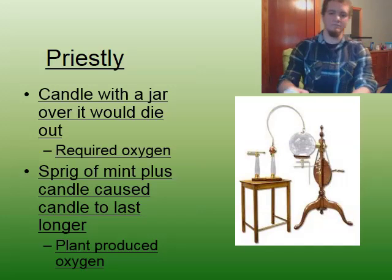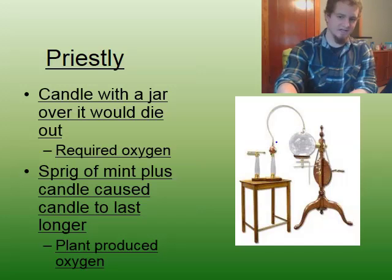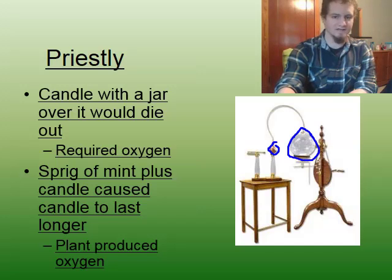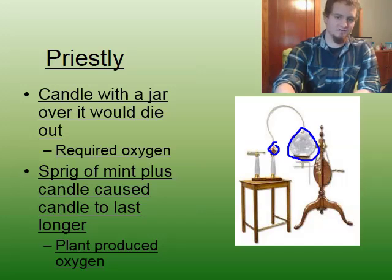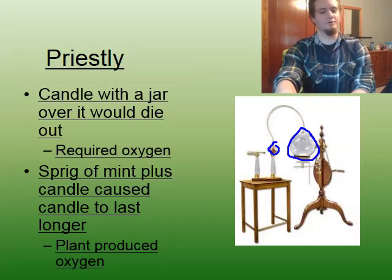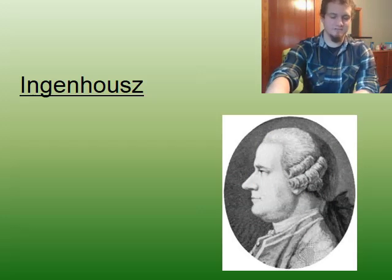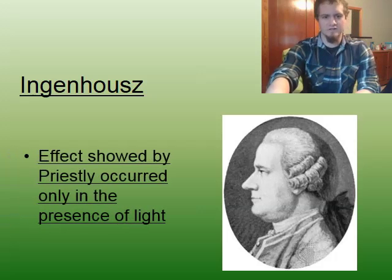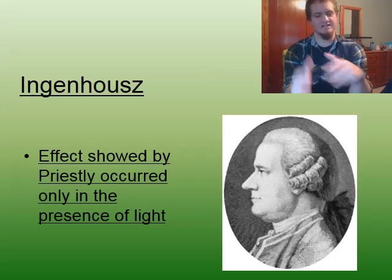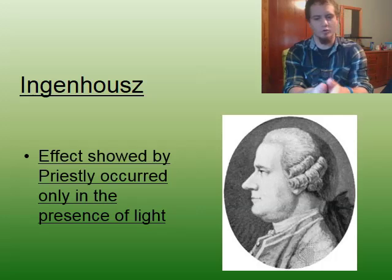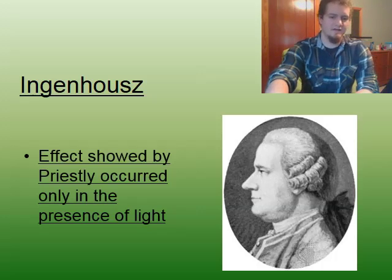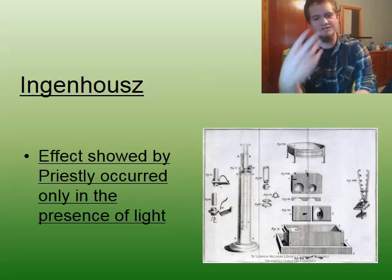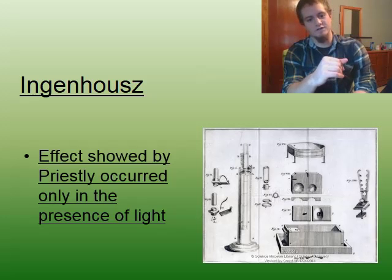Since Priestley knew that flames need oxygen to burn, he concluded that plants must produce oxygen. The mint would produce oxygen, give it to the flame to burn, and it lasted for a longer period of time. The next scientist is Ingenhaus — he did the same experiment as Priestley except with two different variants: one in light and one in the absence of light. What he found was that plants only produce oxygen in the presence of light.